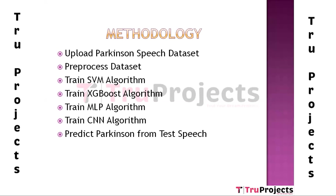The fifth module is to train the Multilayer Perceptron algorithm. Using this module, we train the MLP algorithm with the proposed training data and then apply the trained model on 20% of test data to calculate prediction accuracy.